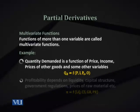First, before moving to partial derivatives, we should speak of multivariate functions, because partial derivatives are a phenomenon used in multivariate functions. A multivariate function is one where the dependent variable depends on more than one independent variable. For example, when we speak of demand functions, we normally say that quantity demanded is a function of price, income, tastes, prices of other variables, and so on.